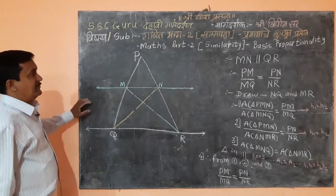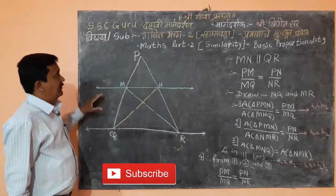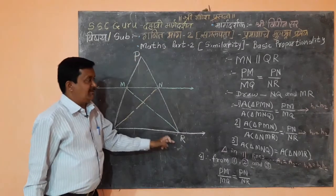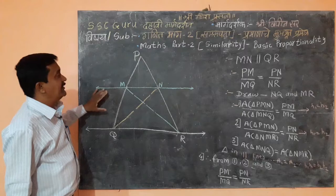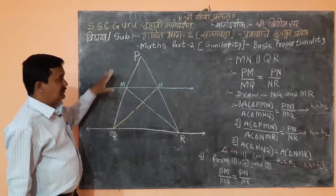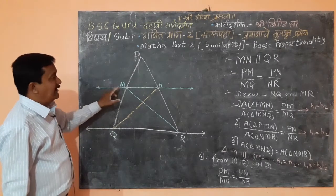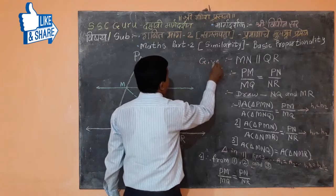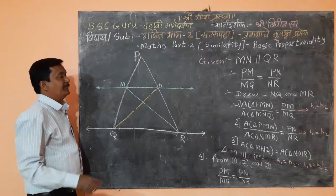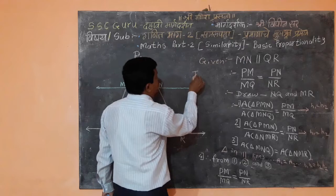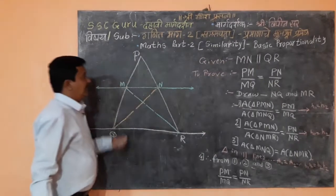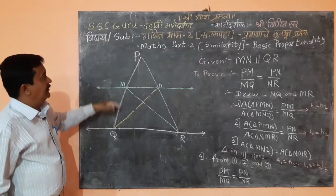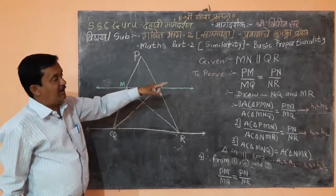What is the statement of the Basic Proportionality Theorem? In triangle PQR, if a line intersects two sides in two distinct points, it divides these two sides in the same proportion, and that line MN is parallel to QR. Given: MN parallel to QR. To prove: the same proportion of parts, that is PM upon MQ equal to PN upon NR. We have to prove this.